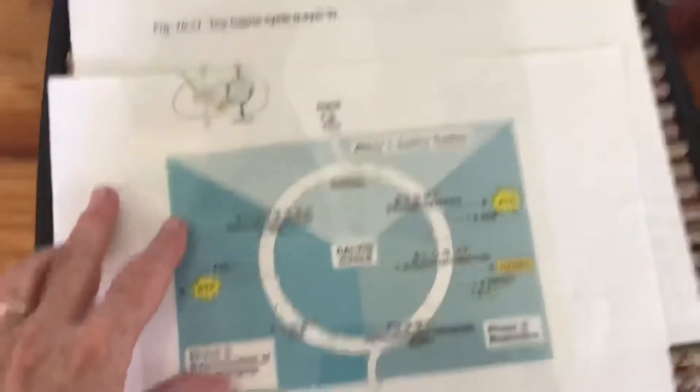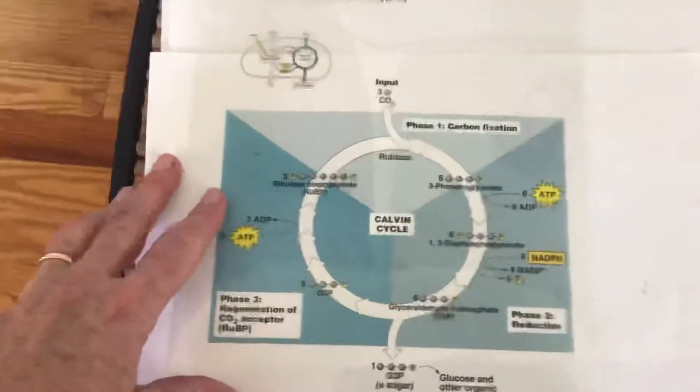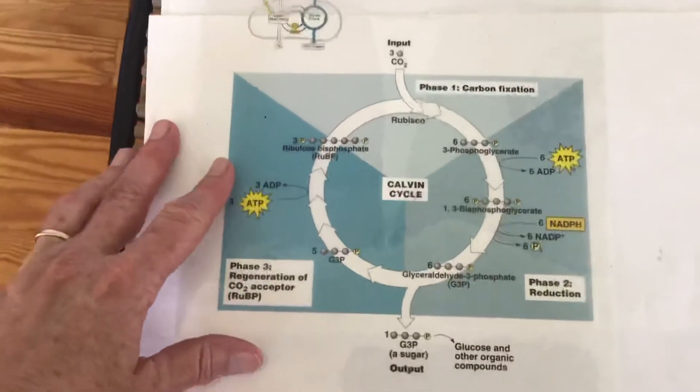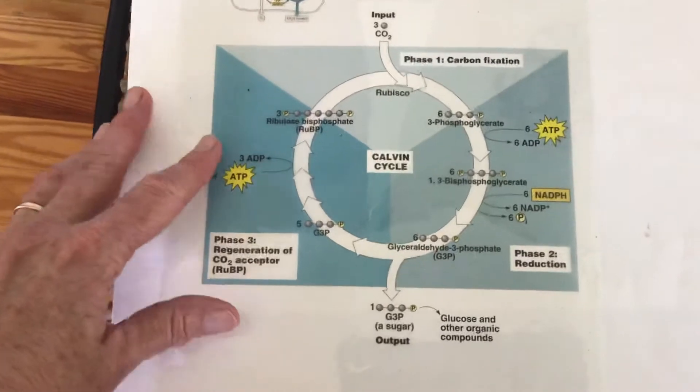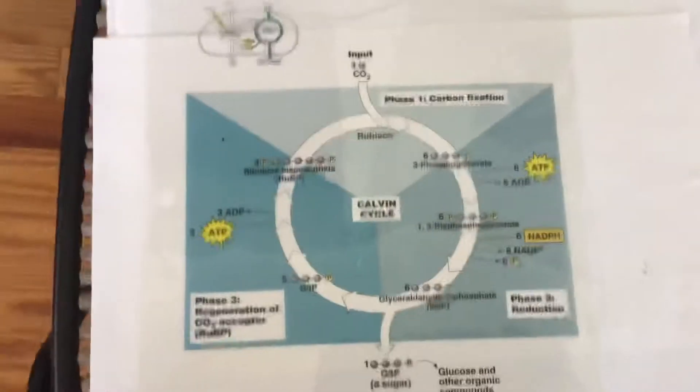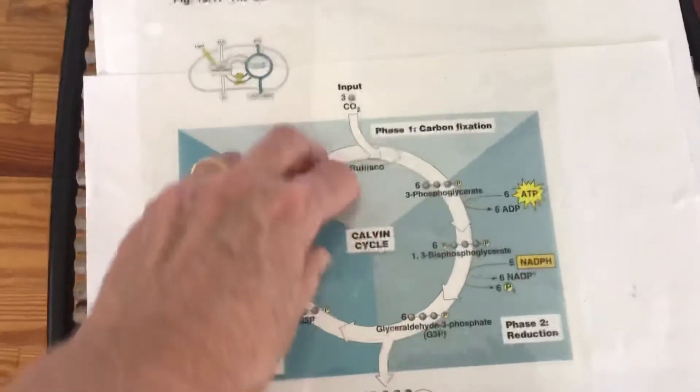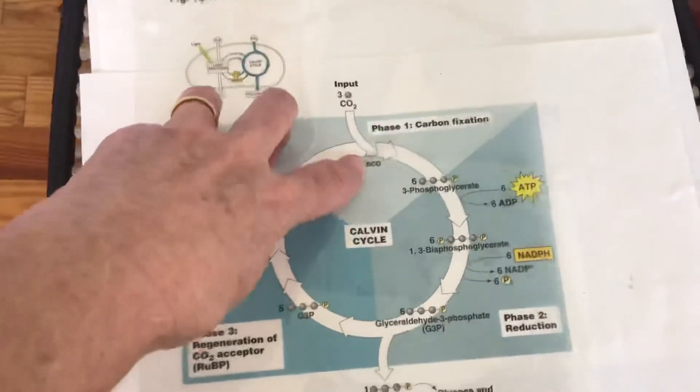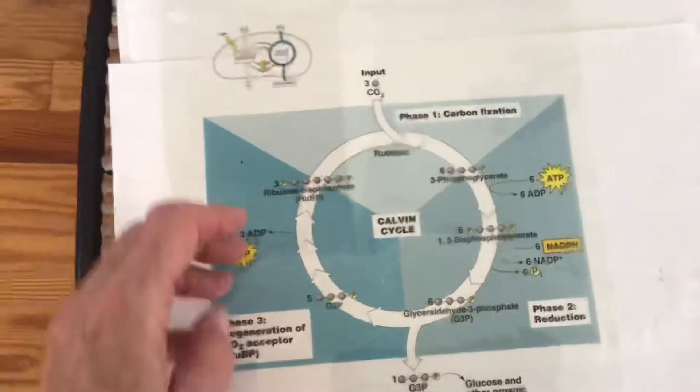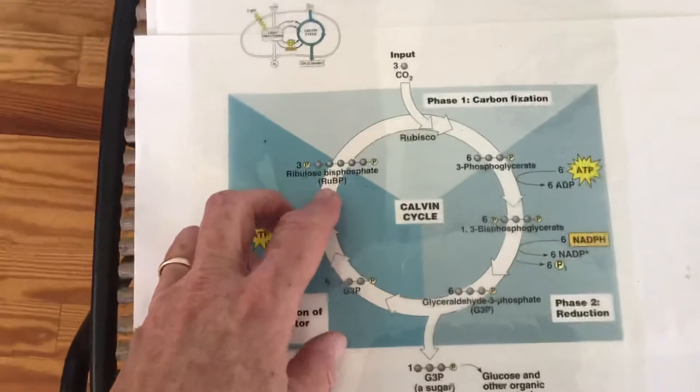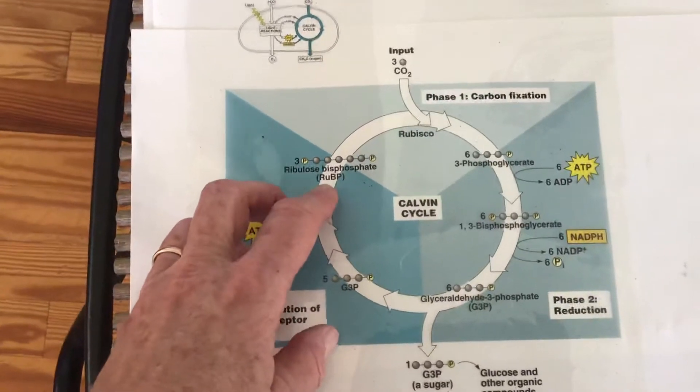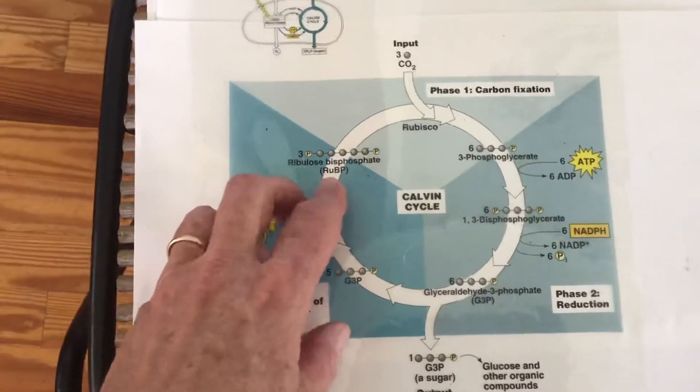Let's talk about the next part of the process. That is called the Calvin cycle. The Calvin cycle is a cycle much like the Krebs cycle, only in this case, instead of breaking down molecules, we're putting them together. So what's going to happen in this part of the cycle is that I'm going to input carbon dioxide into the cycle. It's going to be picked up by a five-carbon molecule called ribulose bisphosphate.